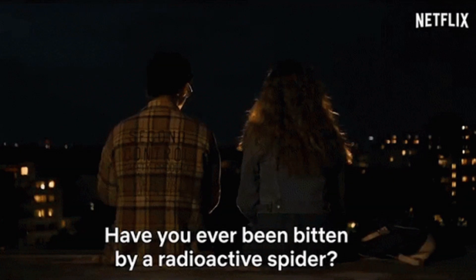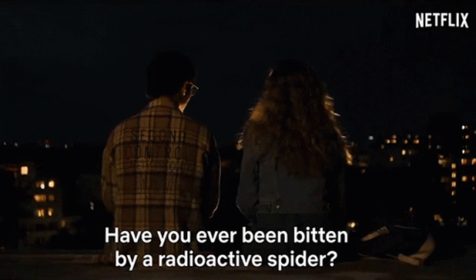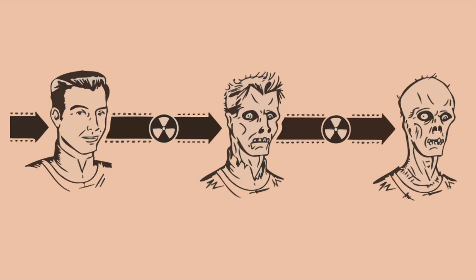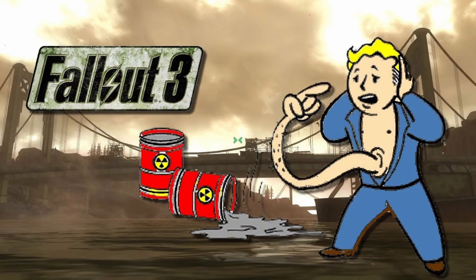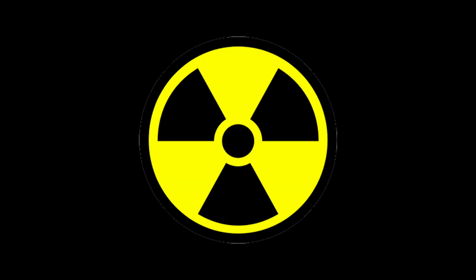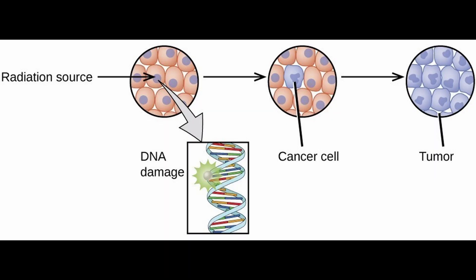While in the comics radiation can give you superpowers, in real life prolonged or intense exposure to radiation can damage living tissues, potentially resulting in radiation sickness, cancer, and genetic damage. This is because radiation can ionize atoms and cells, which leads to the breakage of DNA strands, potentially resulting in mutations, impaired cell functions, or cell death.